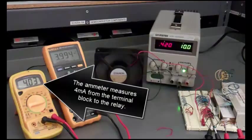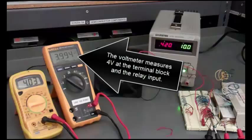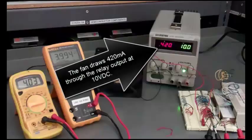The ammeter measures 4 milliamps from the terminal block to the relay. The voltmeter measures 4 volts at the terminal block and the relay input. The fan draws 420 milliamps through the relay output at 10 volts.